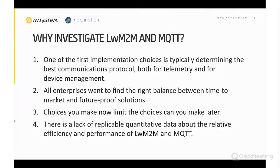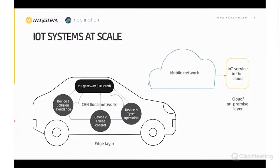Let's take a step back. Connected cars are a simple example of a complex IoT system. Every car has a number of IoT devices inside it — units controlling collision avoidance, cruise control, tire operation, and so on.